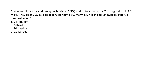Question number two. A water plant uses sodium hypochlorite at 12.5% to disinfect the water. The target dose is 1.2 milligrams per liter. They treat 0.25 million gallons per day. How many pounds of sodium hypochlorite will need to be fed? A: 2.5 pounds per day. B: 5 pounds a day. C: 10 pounds a day. Or D: 20 pounds a day. Pause if you're going to work through it yourself.